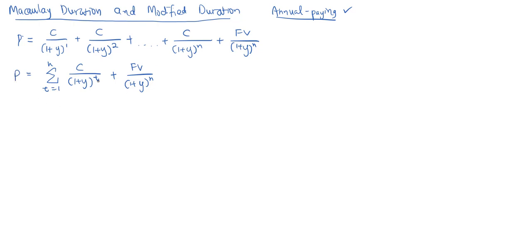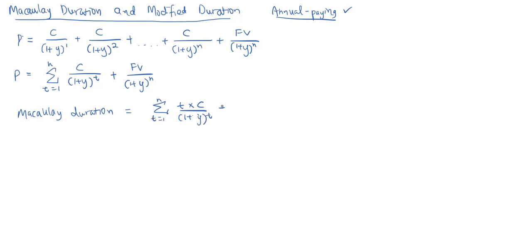Before applying calculus, let's go through what Macaulay duration is. Macaulay duration is a weighted average of time, where the weights are the present values of the cash flows. It is the sum of the time for each cash flow multiplied by the coupon, discounted by Y to the power of T, for T from 1 to N, plus the face value term: period N times the face value divided by 1 plus Y to the power of N. The whole expression is then divided by the price of the bond.